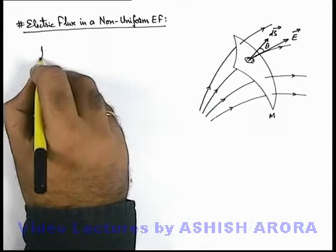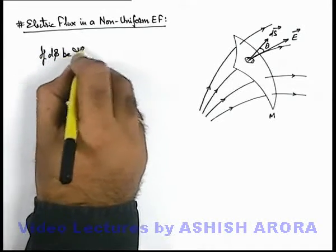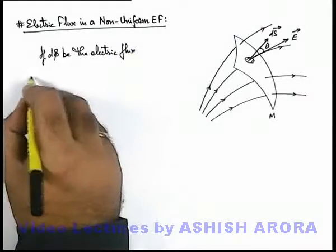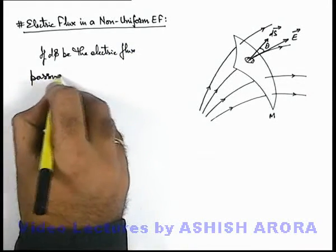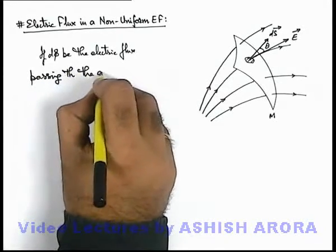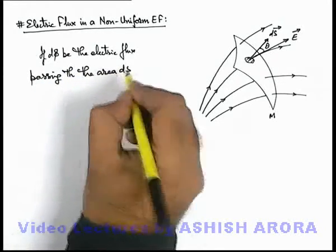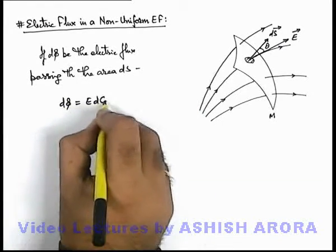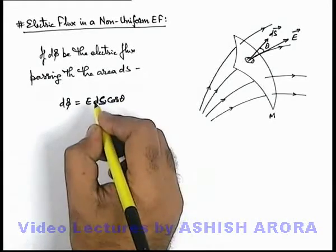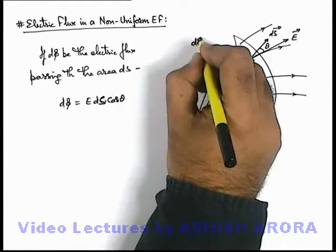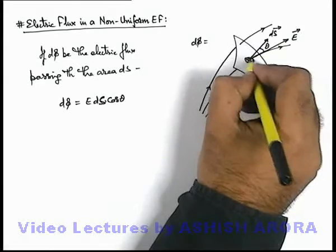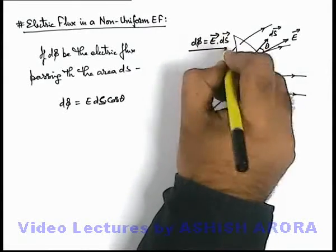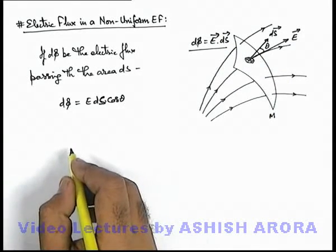Here we can say, if d-phi be the electric flux passing through the area dS, then this d-phi can be written as E dS cos(theta). Because we know that d-phi can be written as E dot dS — this is the flux passing through this section, as we already studied in previous sections — so this can be written as E dS cos(theta).